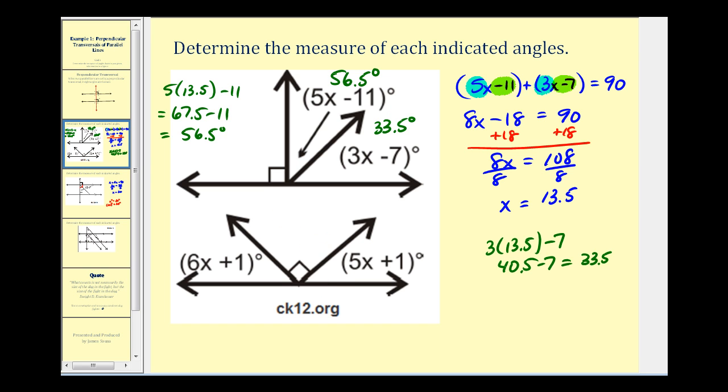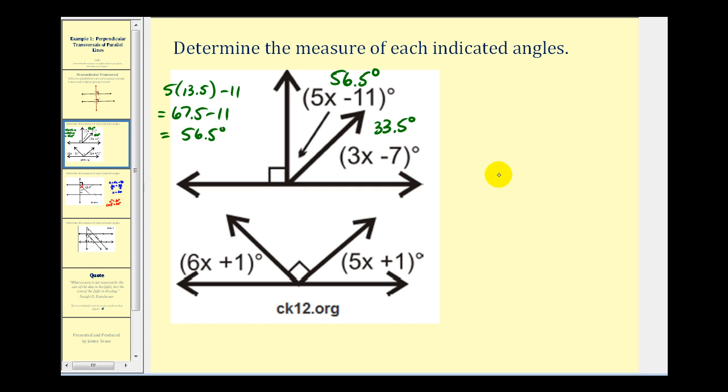Let's go ahead and take a look at this second example. Notice these three angles form a straight angle. So if this is 90 degrees, the sum of the remaining two angles must also be 90 degrees. So it's very similar to the problem above. We would have 6x plus 1 plus 5x plus 1 must equal 90.